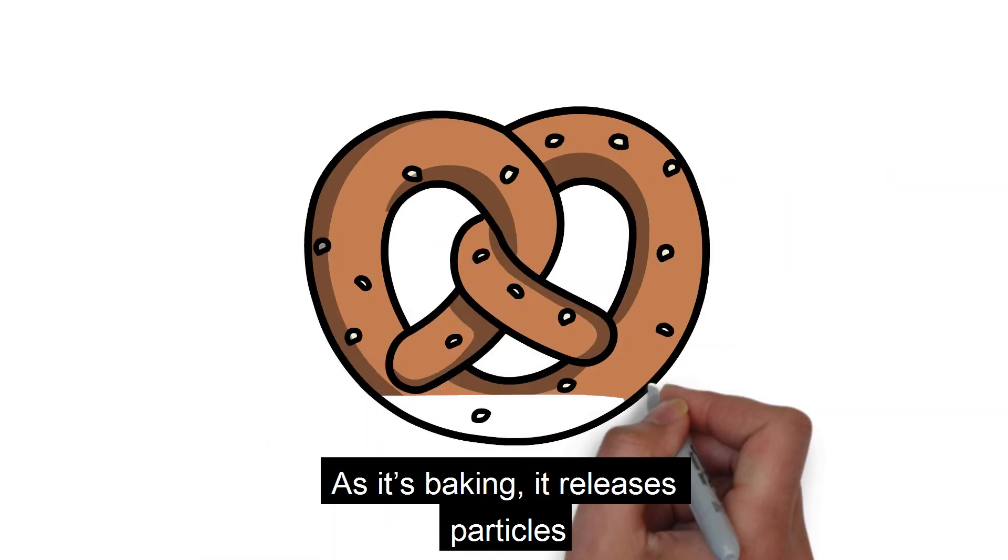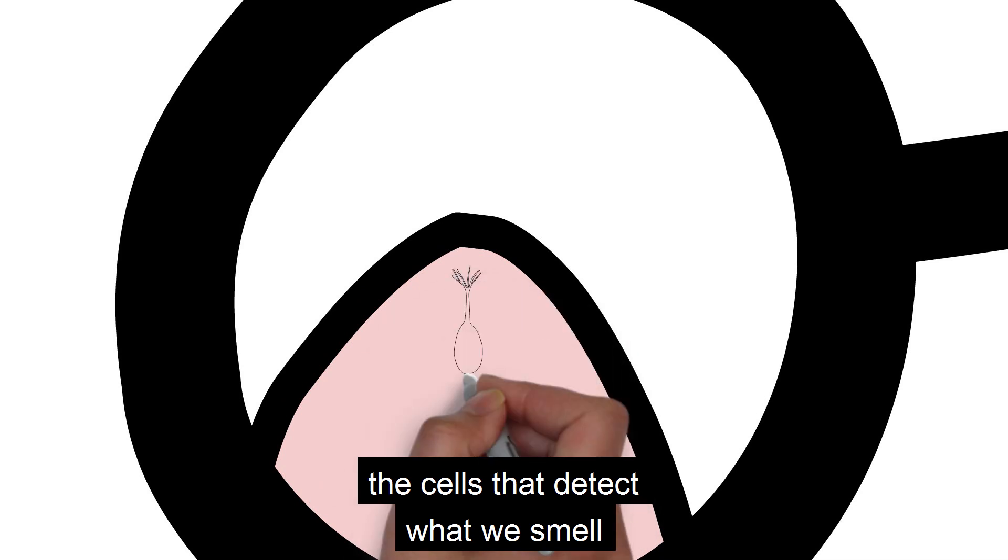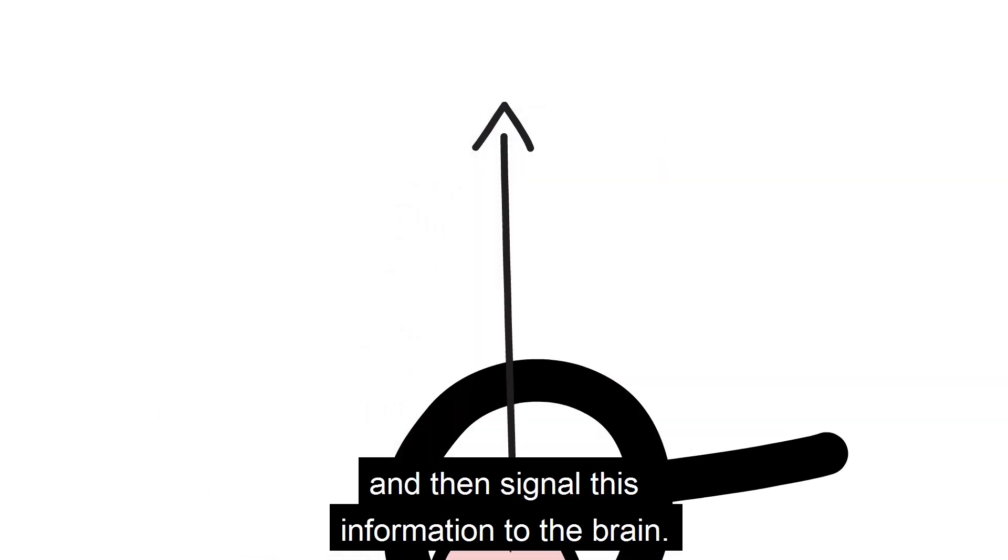Let's say you have something nice cooking in the oven. As it's baking, it releases particles that waft into your nasal cavity and attach to olfactory sensory neurons, the cells that detect what we smell and then signal this information to the brain.